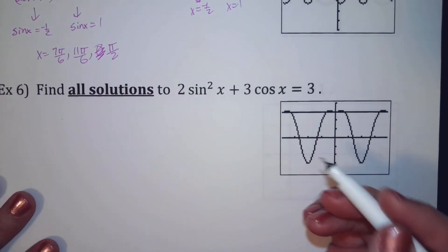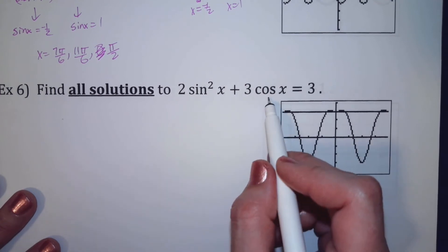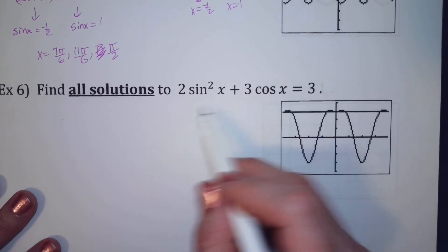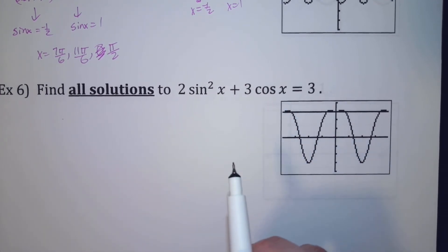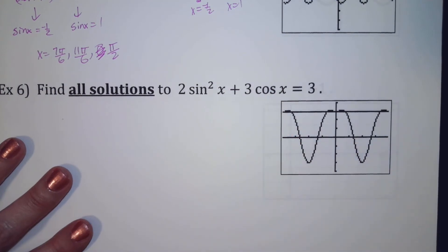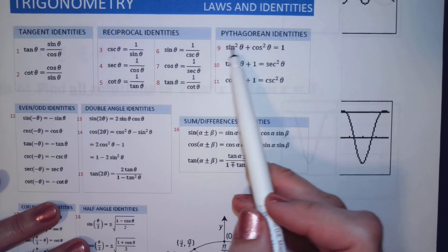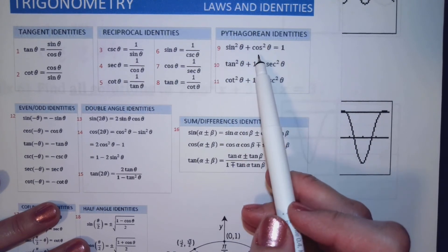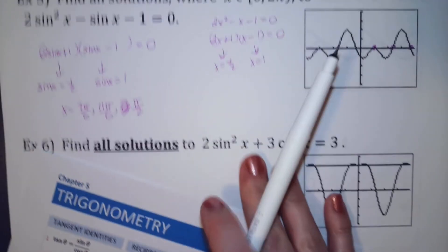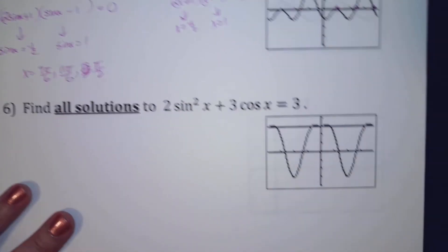This next problem has sine squared and cosine — these don't go together and I can't factor them. But I can use my identities: I can turn sine squared into cosine squared using the Pythagorean identity, and that'll create a situation where I can probably factor.